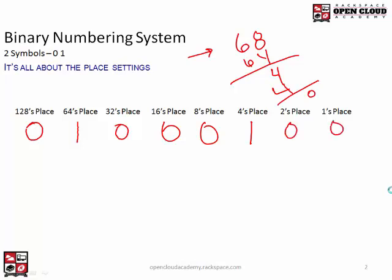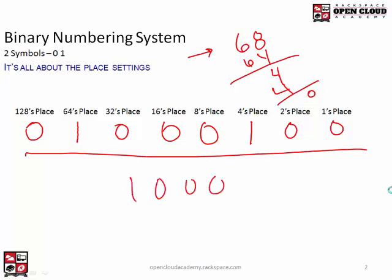To express 68 in binary with all 8 bits, it would be this number here. If you dropped the leading zeros, it would be 1, 0, 0, 0, 1, 0, 0 — that's the binary equivalent of 68 in decimal. Again, just two ways of expressing a quantity with two different numbering systems. They both mean the exact same quantity. If I were to draw 68 circles, I could say I've drawn 1000100 circles, or I can just say 68.